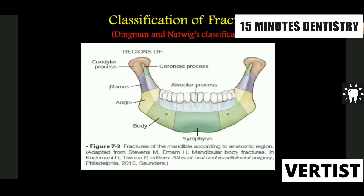For the paucity of time, we are going to deal with the basic ones — that is the Dingman and Natvig classification, which we use easily to communicate with other people. This is according to the anatomic part: you have the condylar process, the coronoid, the ramus, angle, body, and symphysis. It is as simple as that. You can just say the patient has suffered a fracture of the body of the mandible. You also have the alveolar fractures or the dentoalveolar fractures.